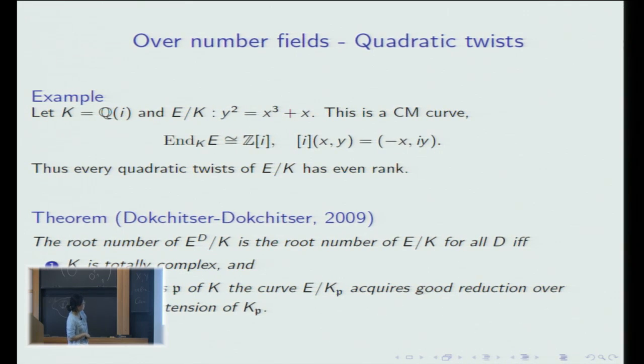Then Dokchitser and Dokchitser gave an if and only if condition. It tells every quadratic twist have the same root number. The condition is here.